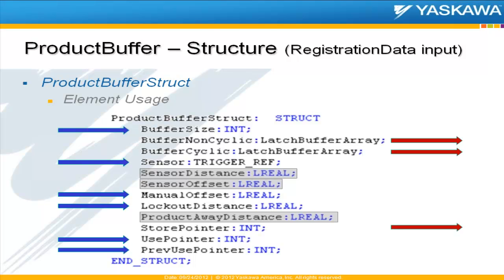It's helpful to know which elements are inputs to the block and which are outputs. There are only a couple of key outputs: the latched positions themselves and the storage pointer location. The inputs that the user needs to provide are the buffer size, the sensor, the manual offset, and the lockout distance. The program is also required to update the use pointers and the previous use pointers.